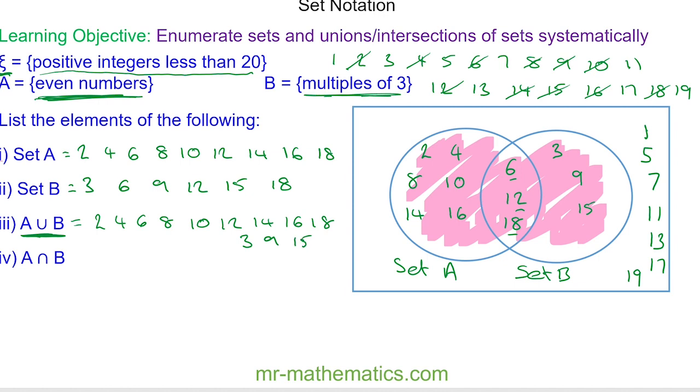And finally, list the elements intersecting with A and B, which is where the two overlap, and these elements are 6, 12, and 18. Okay, a question for you to try.